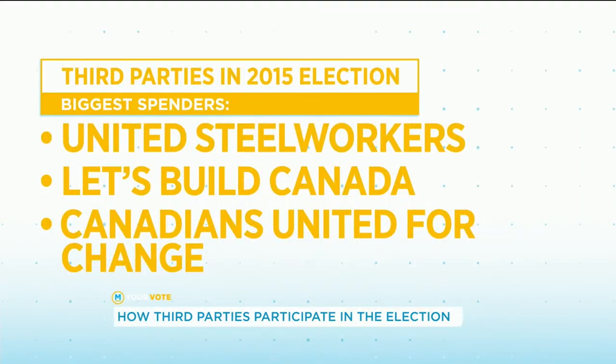Looking back at the last federal election in 2015, the United Steelworkers — a steelworkers union — spent the most as a third party. They were followed by Let's Build Canada, a coalition of construction unions, and Canadians United for Change, which is backed by an international engineers union. These are very large, well-funded organizations, so how does Elections Canada limit how much influence they can have on an election?